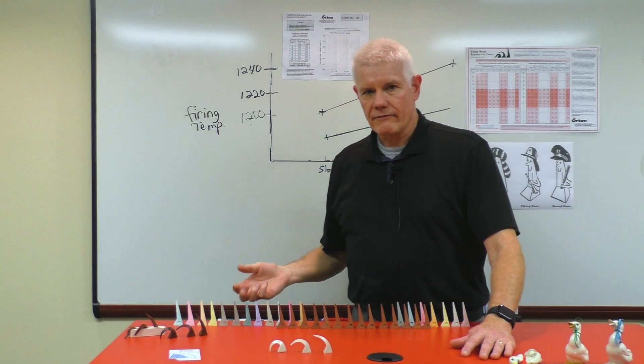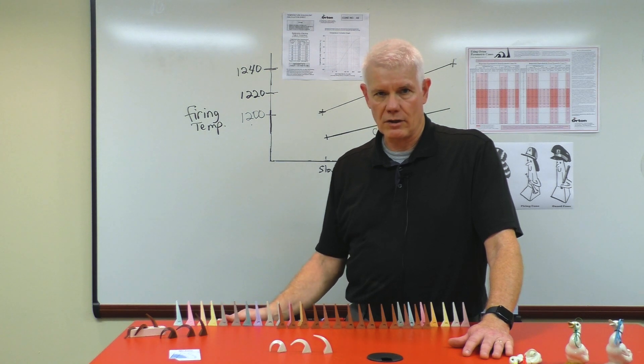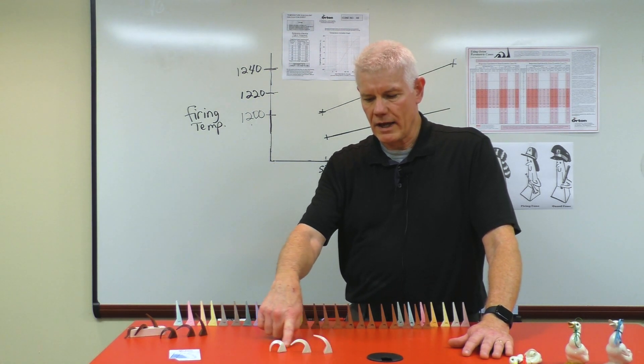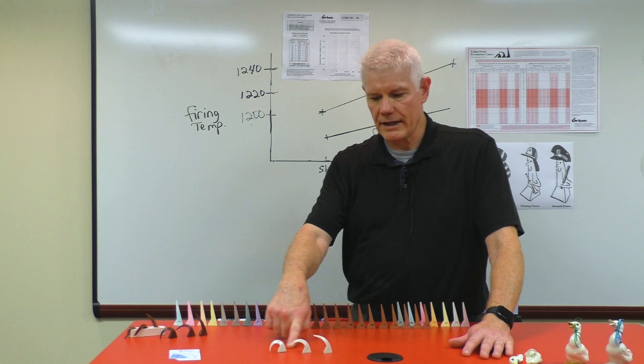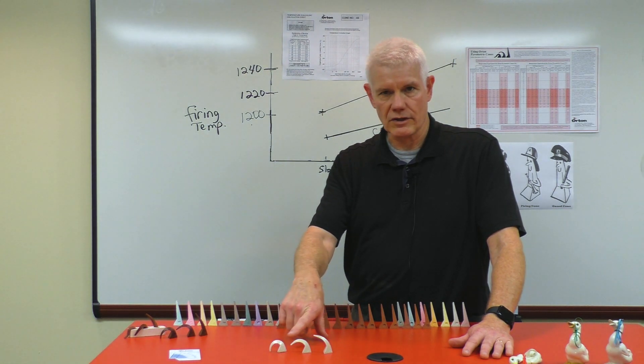If you are firing your kiln and you're going to target cone 6 and you get a cone that looks anything like these here in front of me, you've actually achieved cone 6 because the cone has started to deform.